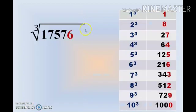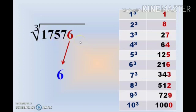Let me explain the method using an example. Here we have the number 17,576. This number ends in 6. We already know that if a number ends in 6, the cubic root also ends in 6, so we write 6 in the units place. Second, we skip 3 digits from right to left — up to the hundreds place — and whatever is remaining is 17. We see where 17 falls in the table: it falls between 8 and 27. We take the lower range, which is 8, and the corresponding cubic root is 2. So the cubic root of 17,576 is 26.